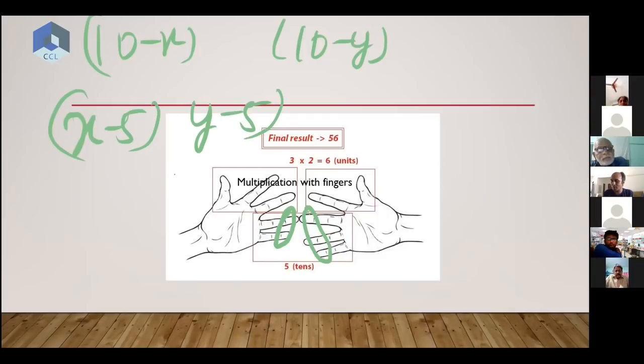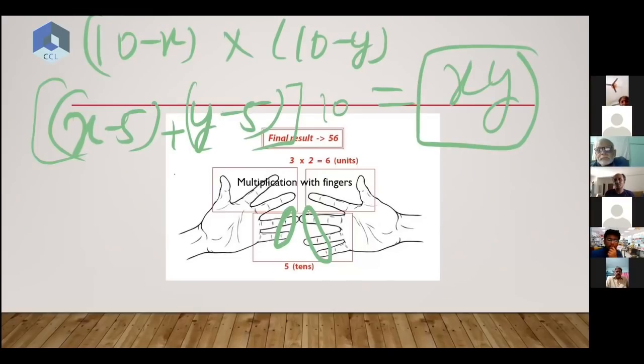For bottom it will be x minus 5, and he's adding the two fingers and then multiplying it by 10. And you add these two things, you get xy. So that's why this thing works. This is the proof - this is what we call the formal proof.